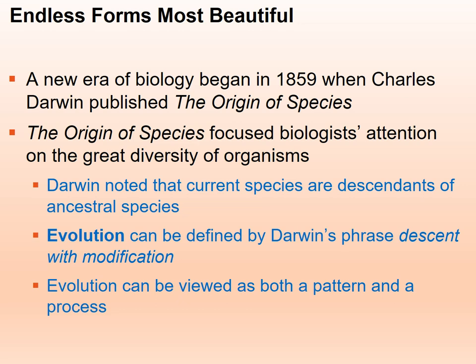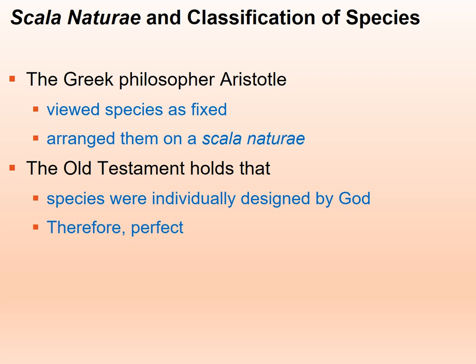Darwin described evolution as 'descent with modification.' He didn't really use the term evolution — that term came much later. So the term evolution, or the phrase that described it, kind of evolved over time. Now, evolution can be viewed as both a pattern and a process. Darwin wasn't the only one who noticed differences in species or was inquiring about it.